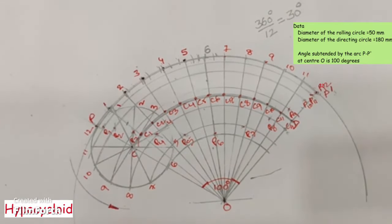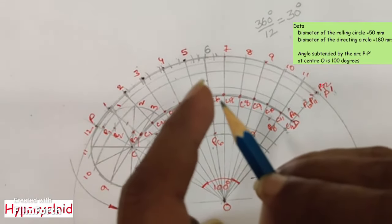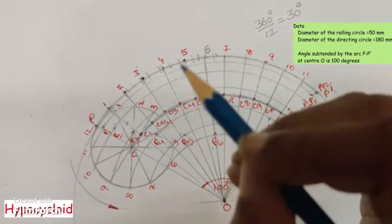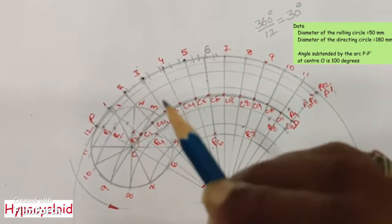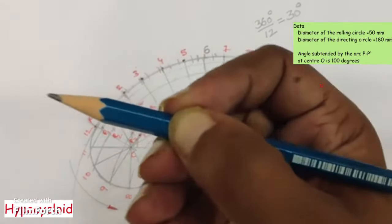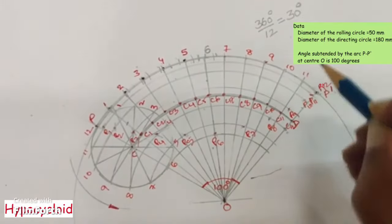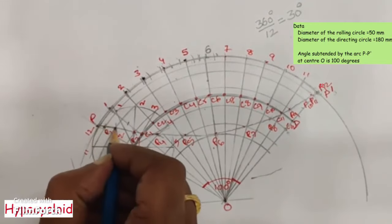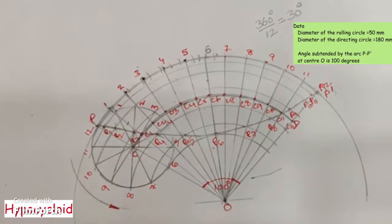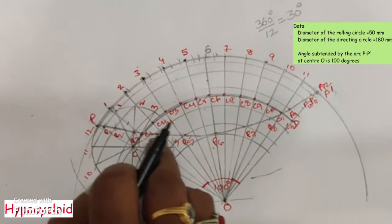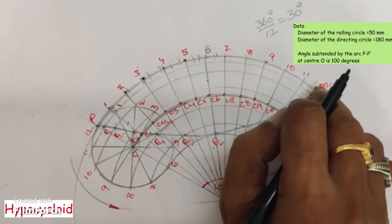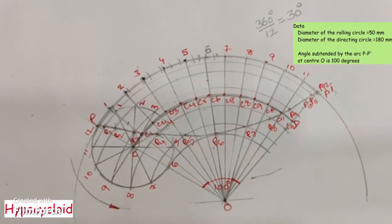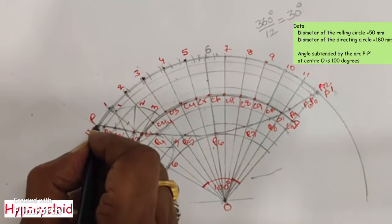While drawing the smooth curve, hold the pencil some distance from its tip and do not hold it tightly — hold it freely so that freehand curves can be drawn easily. This is the required hypocycloidal curve. Dark this curve with an H pencil at 100% darkness.